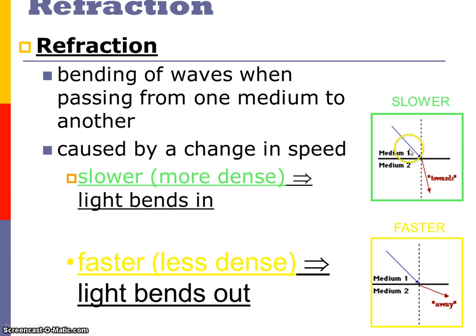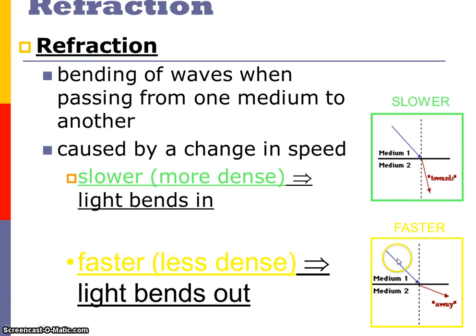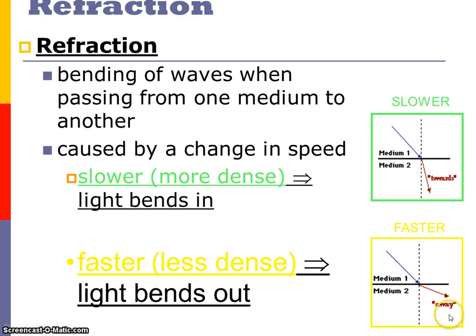When we slow down a light wave by going from a less dense medium to a more dense medium — such as from air into water — it's going to slow that wave down and bend it inward. Whereas if we go from a more dense medium to a less dense medium — such as from water into air — it's going to speed up, because the less dense the medium the faster it goes, and it will bend outward. That is refraction — what can happen to light when it changes mediums.